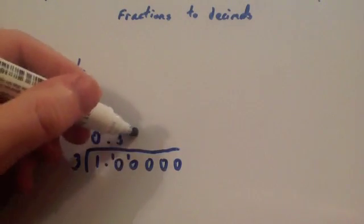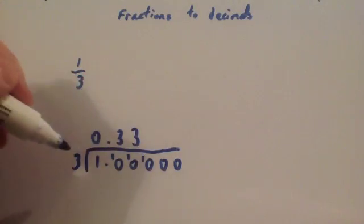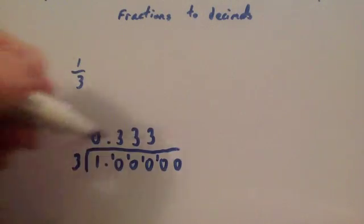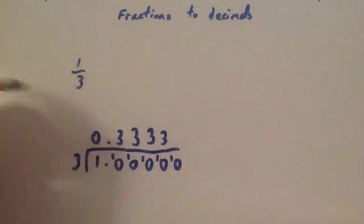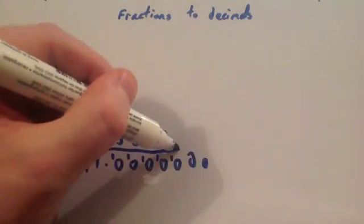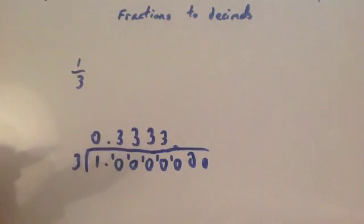Remainder 1. 3 into 10 goes 3 times. Remainder 1. 3 into 10 goes 3 times. Remainder 1. Notice what's happening here. 3 into 10 goes 3 times. Remainder 1. And this will just carry on forever. You could add more zeros on. And you carry on the bus shelter. And you just keep on going.